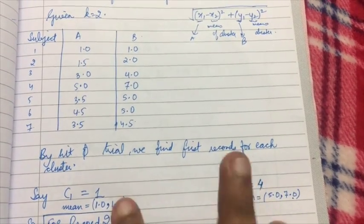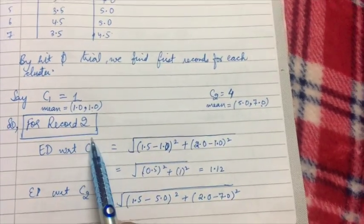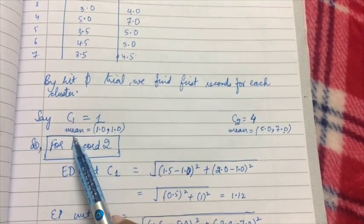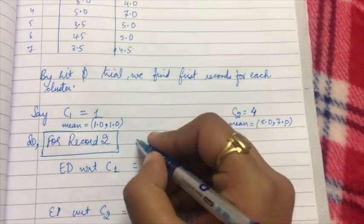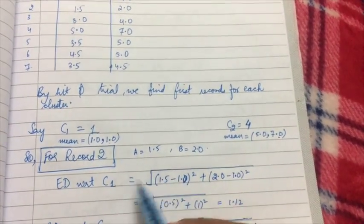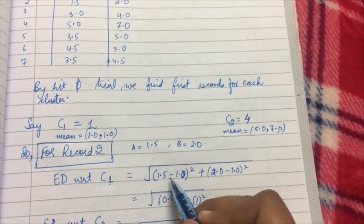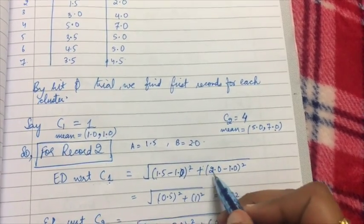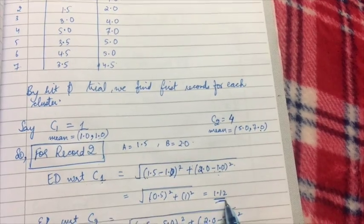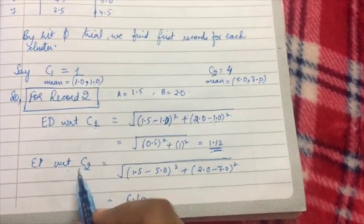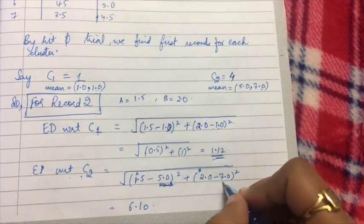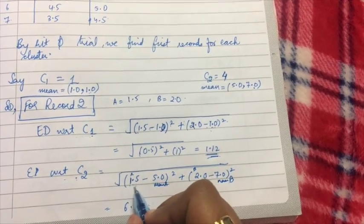Now we have record one in cluster one and record four in cluster two. For record two, we find the Euclidean distance with respect to the mean of cluster one and the mean of cluster two. For record two, the value of a is 1.5 and b is 2.0. The Euclidean distance with respect to C1 is: (a minus mean of C1) squared plus (b minus mean of C1) squared, and I find the value to be 1.12.